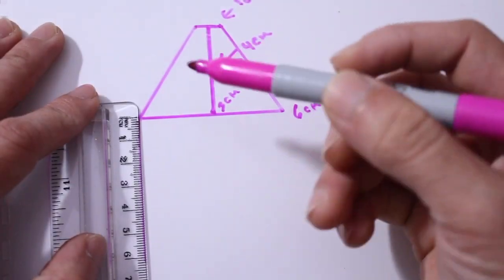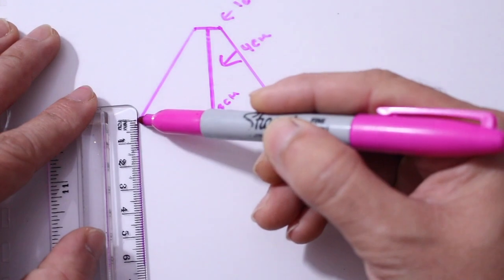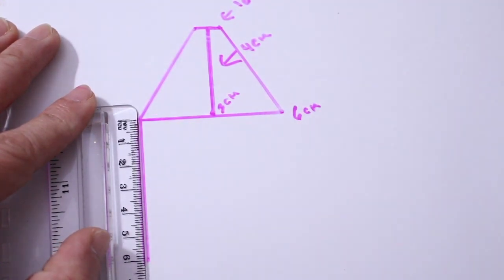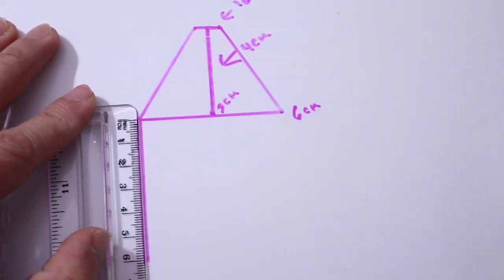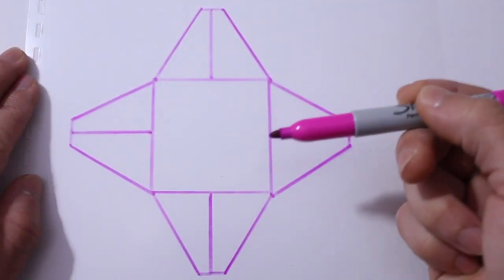So once you have the first part done you want to go ahead and go six centimeters and do the entire process all four corners on a square. So once you're done it should look something like this.